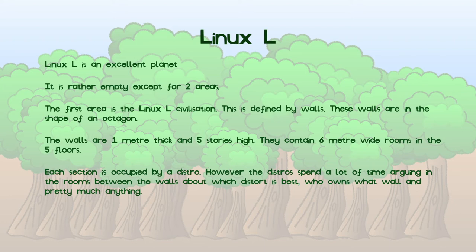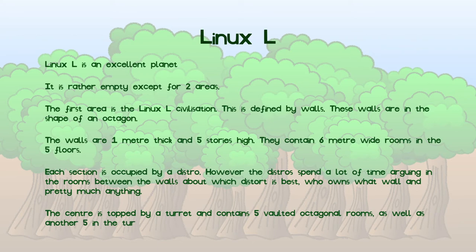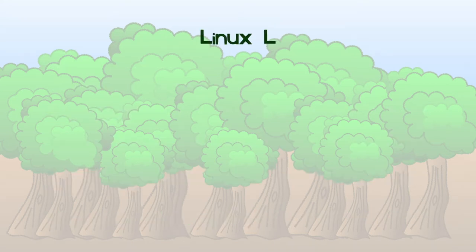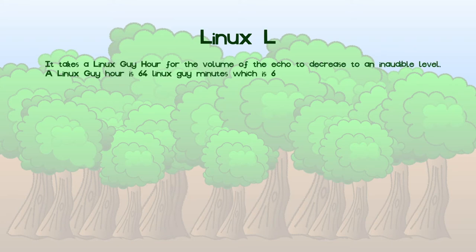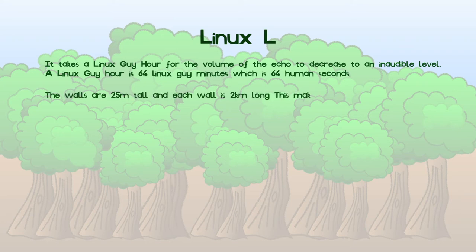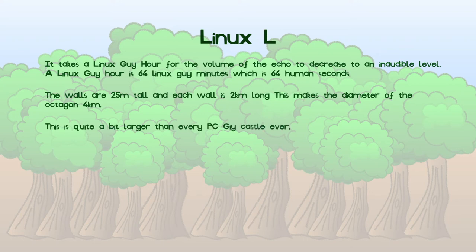The owner of the walls, and pretty much anything else — the place all 8 walls meet — is an octagonal vaulted tower which has 10 vaulted octagonal rooms and has the most arguments. This slide is a continuation of the last one as I ran out of space. It takes a Linux guy hour for the noise caused by the vaulted rooms echoing to die down to a level which the average Linux guy or human cannot hear. A Linux guy hour is 4096 seconds rather than 3600. The walls are 25 meters high, which is 15 meters taller than a MacGuy wooden tower, and the walls are 2 kilometers long, making the octagon 4 kilometers wide. This is significantly larger than even the largest PC guy castle and must have taken a lot of labor to build.